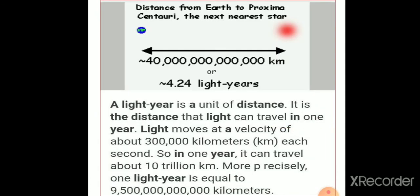Next is light year. A light year is defined as the distance that light can travel in one year. As you are aware, light travels with a speed of 3 into 10 raise to 8 meter per second. So in one year, it will travel approximately about 10 trillion kilometers. 1 light year is equivalent to the value given in kilometers.